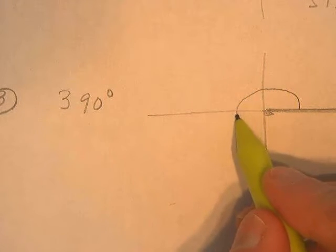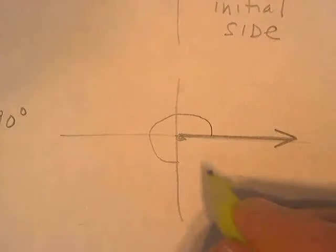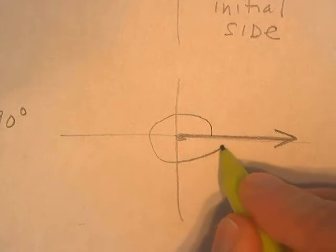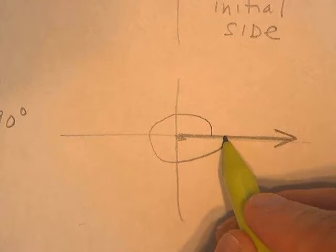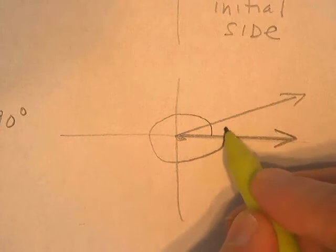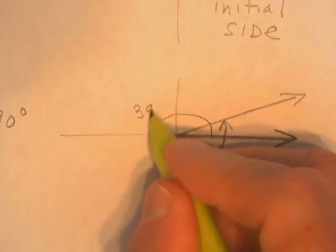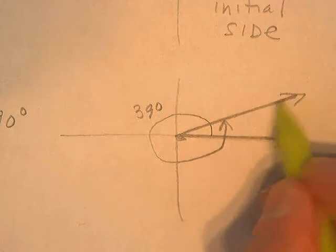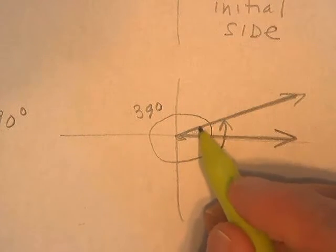That's 180, three times 9 is 270. This is 270. I come all the way back around to there. I get to 360. So I need to go 30 more. So this is 390. And there's the terminal side right there. This little angle in here is 30.